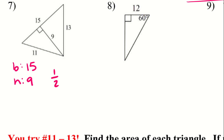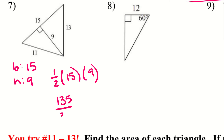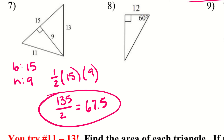We can do one-half times the base times the height. If we leave this as a fraction, we get 135 divided by 2, but as a decimal we get 67.5.